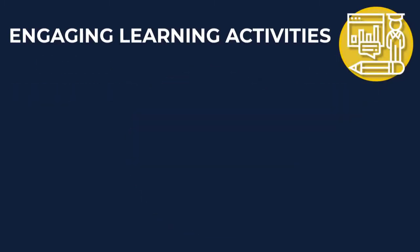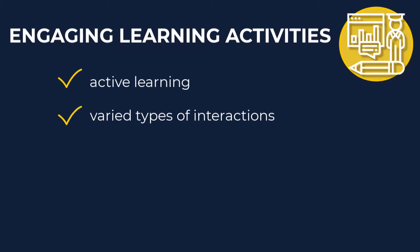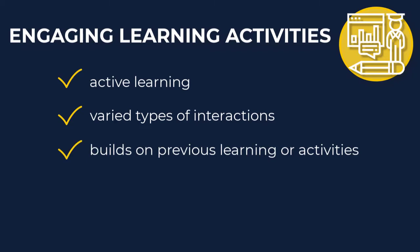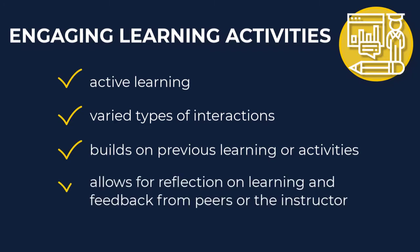The keys to developing effective online learning activities are to create them so that the activities include opportunities for active learning, allow for different types of interactions such as student to student or instructor to student, are sequential so each activity builds on the one before, and include opportunities for students to think and reflect on what they are learning, how they are learning, and the importance of what they are learning with useful feedback from peers or the instructor.